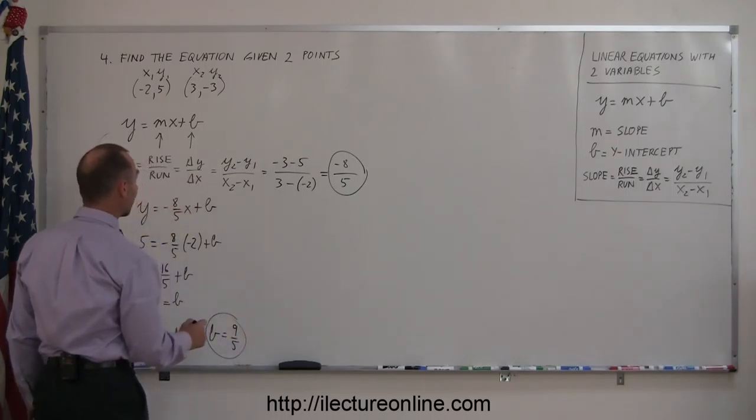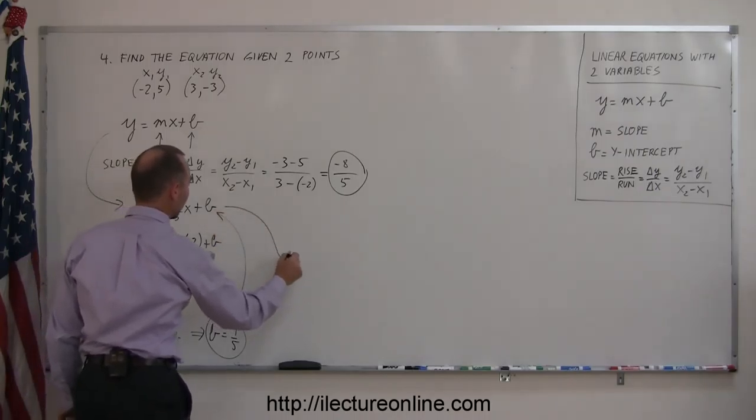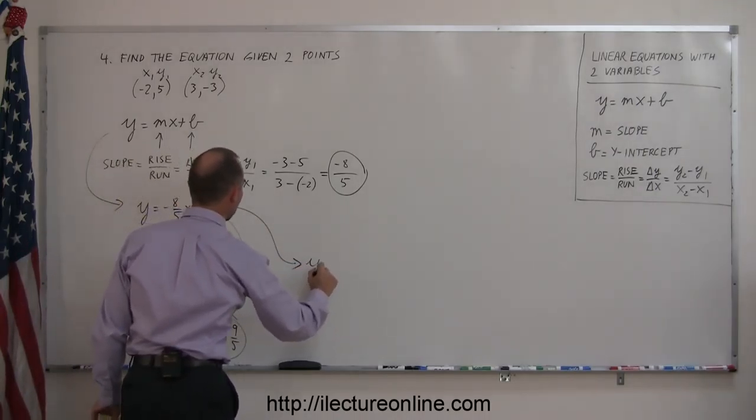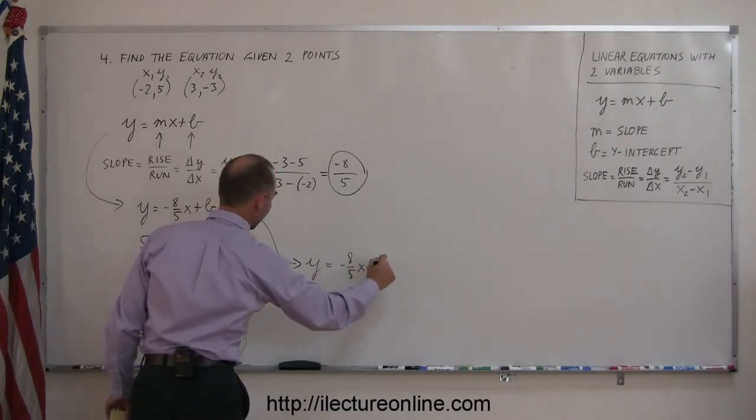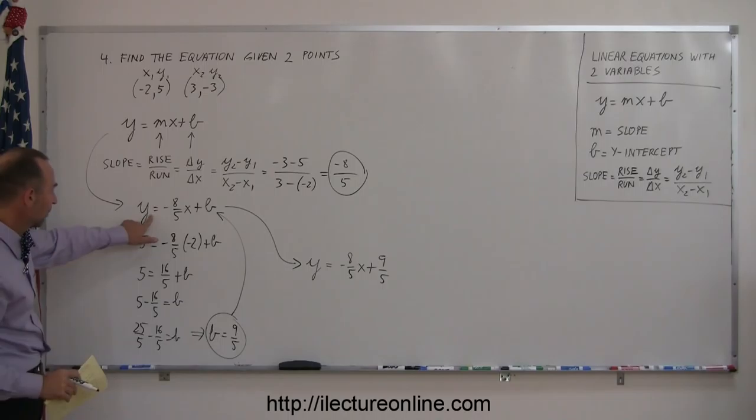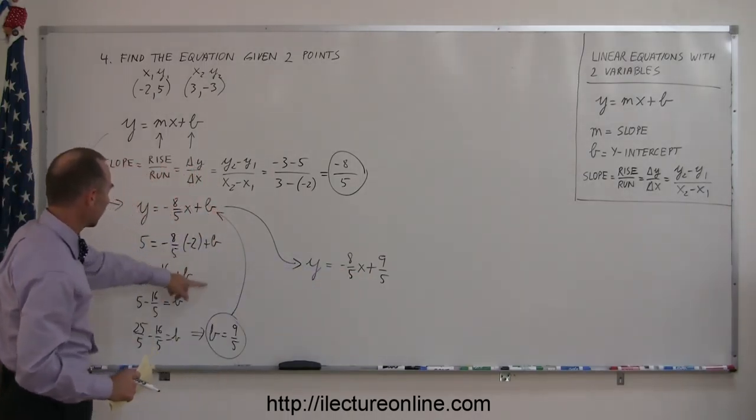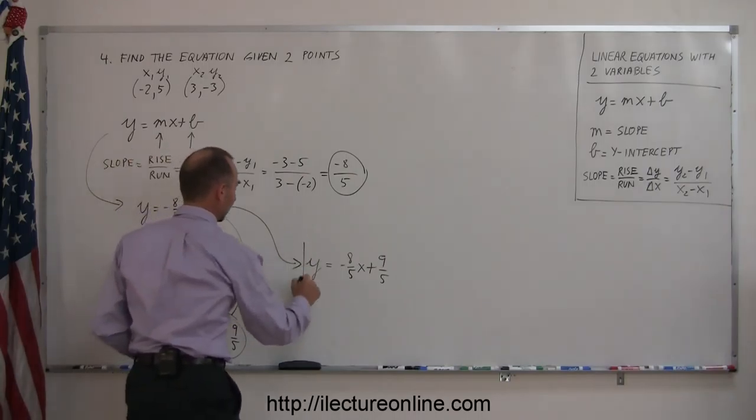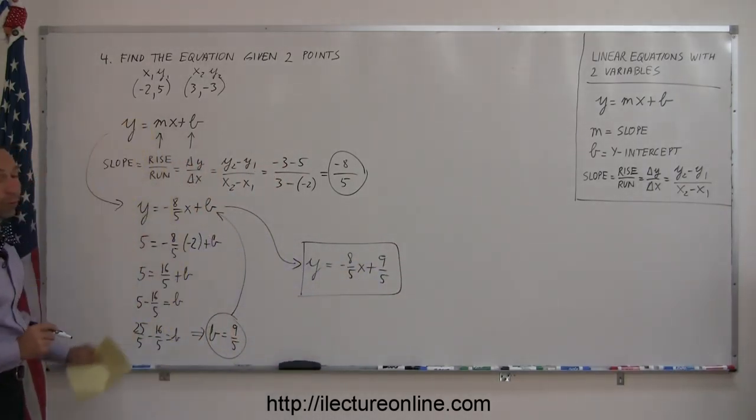I can go ahead and plug that back into my equation over here, which means that y equals minus 8 over 5x plus 9 over 5 is the equation I am looking for. So here we have y equals negative 8 over 5x, and then instead of b we wrote 9 fifths. There is the equation representing the line going through those two points.